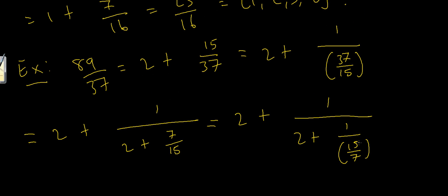So what's 15 over 7? Well, 15 over 7 is 2 remainder 1, because 2 times 7 is 14, and I've got 1 left over. So this becomes 2 plus 1 over 2 plus 1 over 2 plus 1 over 7.